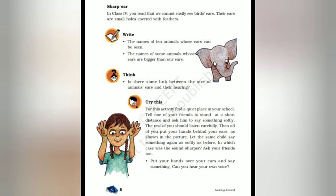So page number 8, let's begin the chapter. For this activity, you should go to a safe place — school or your home. Ask someone to say something very softly and very slowly.